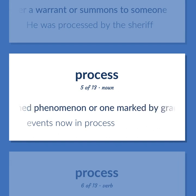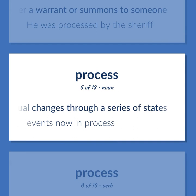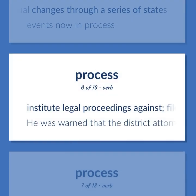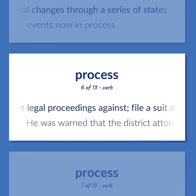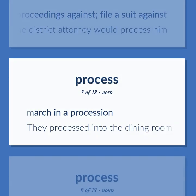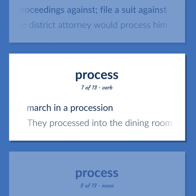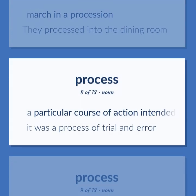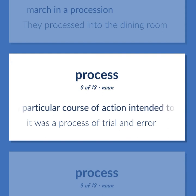A sustained phenomenon or one marked by gradual changes through a series of states — events now in process. Institute legal proceedings against; file a suit against — he was warned that the district attorney would process him. March in a procession — they processed into the dining room. A particular course of action intended to achieve a result — it was a process of trial and error.